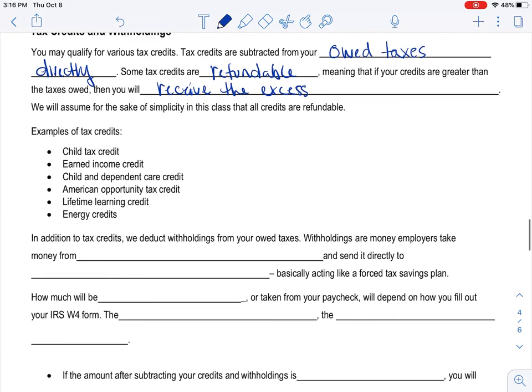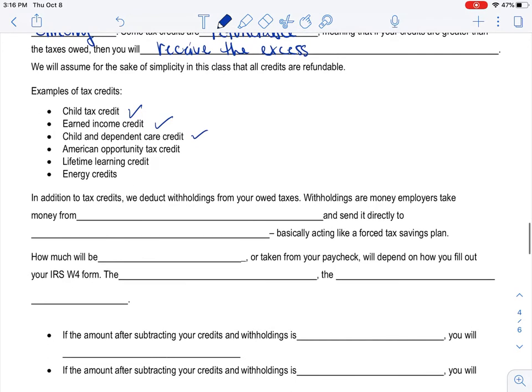So some examples of tax credits are child tax credit, earned income credit, child and dependent care credit, American opportunity, lifetime learning, energy credits, like if you have solar paneling, maybe you can write that off and so forth. But yeah, if you have a good AC, all those wonderful things.